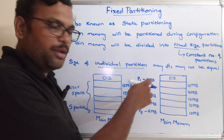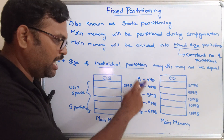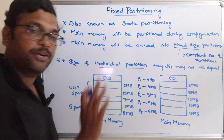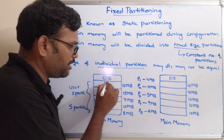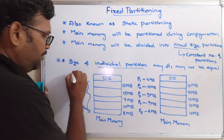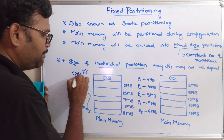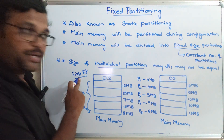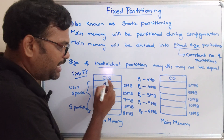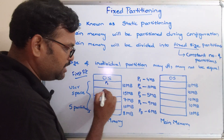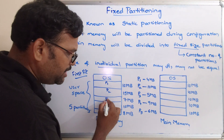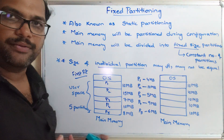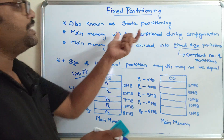For example, P1 is 4 MB. Using first fit, the first partition which is 10 MB can accommodate P1. I will post the link of these allocation methods - first fit, best fit, and worst fit - in the description so you can refer to that. Going with first fit: P1 at 4 MB fits in the 10 MB partition, P2 at 10 MB fits in the next, P3 fits in the next, P4 and P5 can also be accommodated. This is how fixed partitioning is implemented.